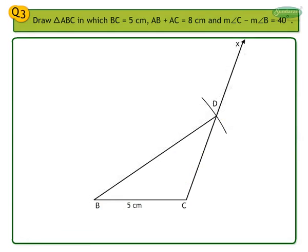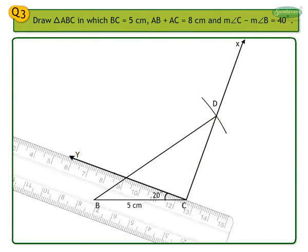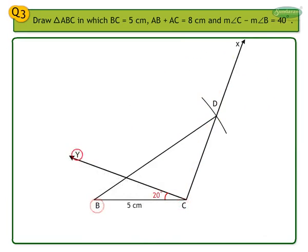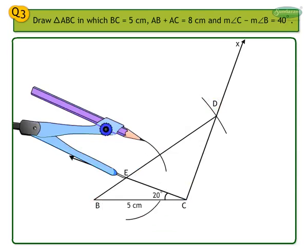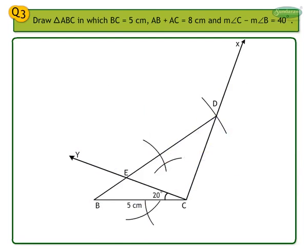Take measure angle BCY as half of angle C minus angle B, which equals half of 40, that is 20 degrees. Take C as center and with measure 20 degrees, draw a ray CY such that measure angle BCY equals 20 degrees. Mark the point of intersection of ray CY with segment BD as point E. Take E and C as centers with more than half the length EC and draw intersecting arcs above and below segment EC. Join the points of intersection of these arcs. Let this perpendicular bisector intersect BD at point A. Join A and C. We have constructed the required triangle ABC.